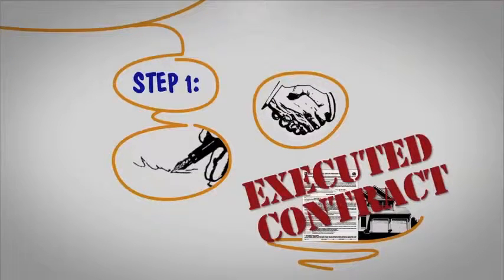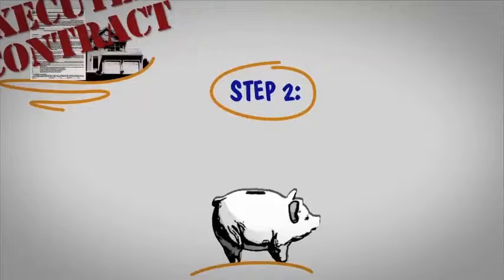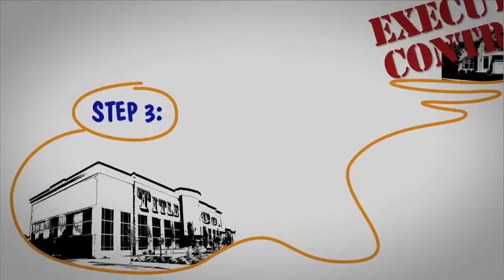Step 2. Any earnest money you have agreed to is deposited in an escrow account. Step 3. The executed contract is sent to the title company, which helps determine whether the seller has the right to sell the property to you.